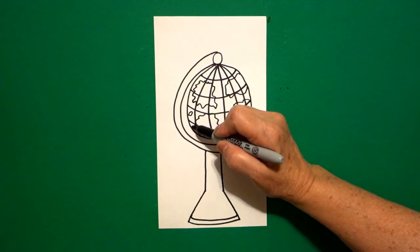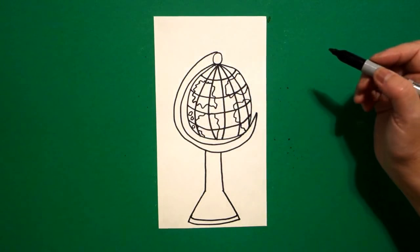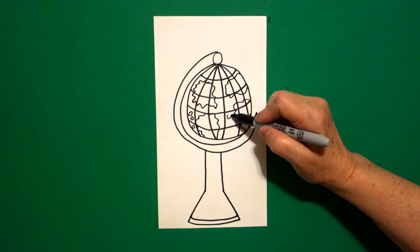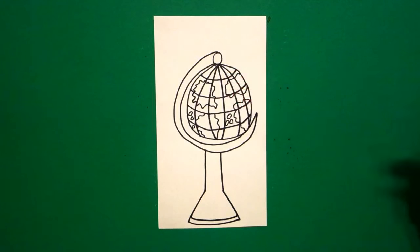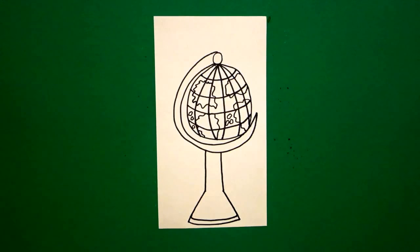You might even put some little connectors on the left, maybe a little connector line on the right. These are not exact, and they're not supposed to be. They're just giving you the illusion of the continents. Let's see if that's it. I think so. We're ready to color.